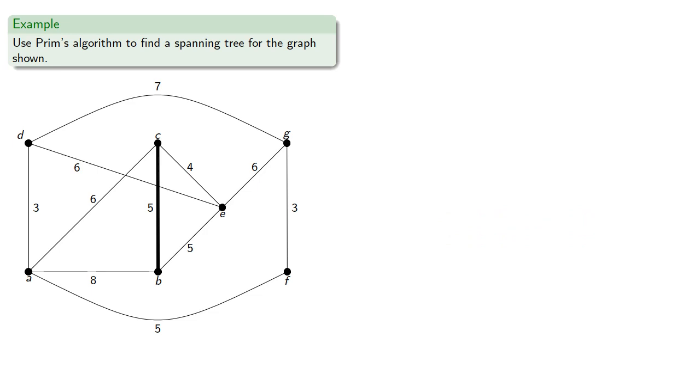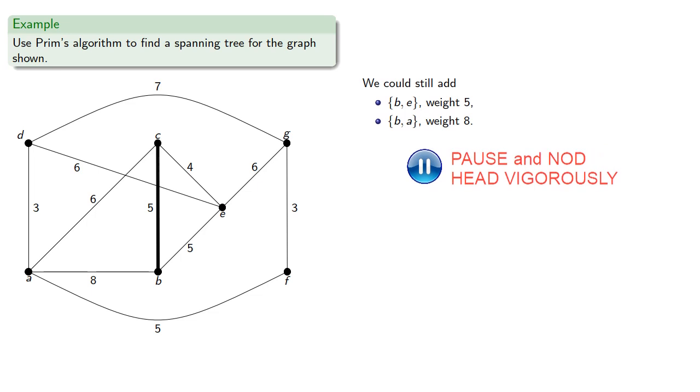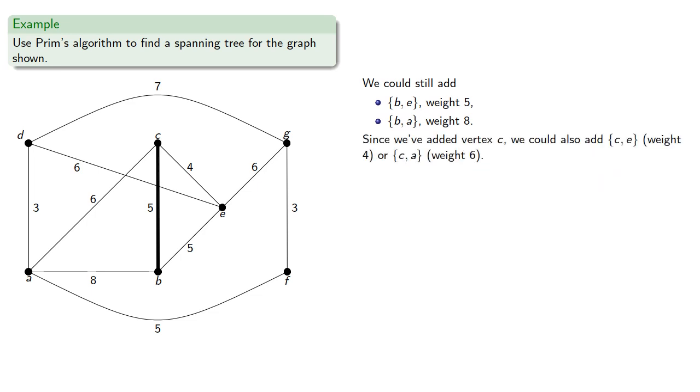Now we could still add BE and BA. But since we've added vertex C, we could also add edge CE with weight 4, or edge CA with weight 6. And we'll add our least weight edge, which would be CE, but we'll include CA on our list of potential additions.